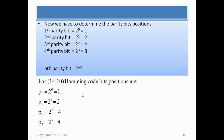Now we have to see how to determine the position of the parity bits in a non-systematic code word. In a systematic code word, parity bits are always at the end or beginning of the information bits. But in non-systematic Hamming code, the position of parity bits is predetermined using the formula 2 raised to power n. The first parity bit is at position 2^0 = 1, the second at 2^1 = 2, the third at 2^2 = 4, and the fourth at 2^3 = 8. So for the (14,10) Hamming code, P0 is at position 1, P1 at 2, P2 at 4, and P3 at 8.